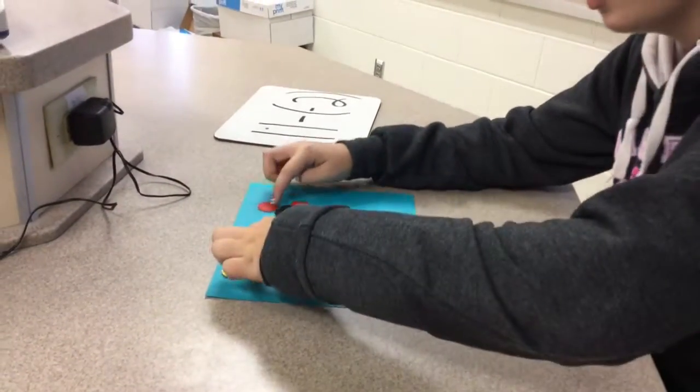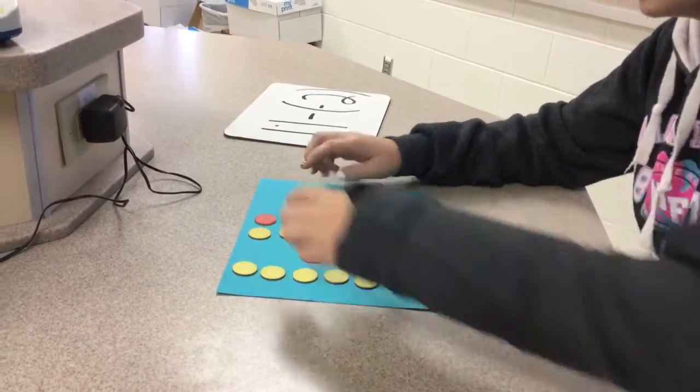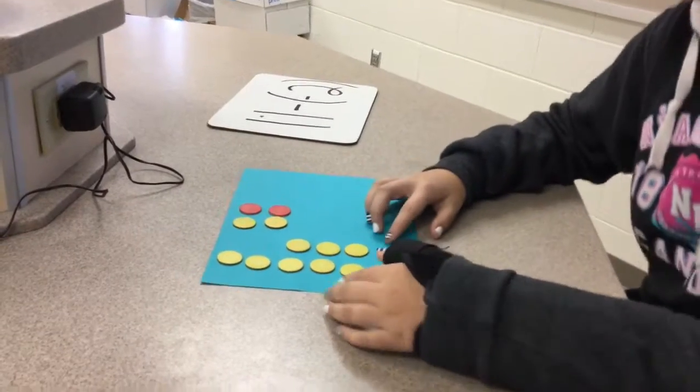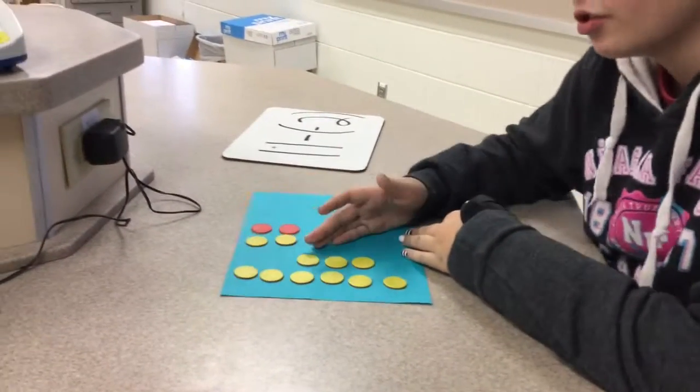So first, you make your pairs of 0, and you look at the rest of the chips, and so your answer is positive 9.